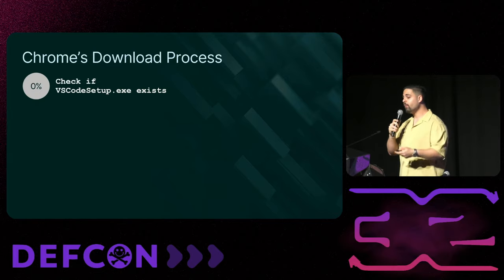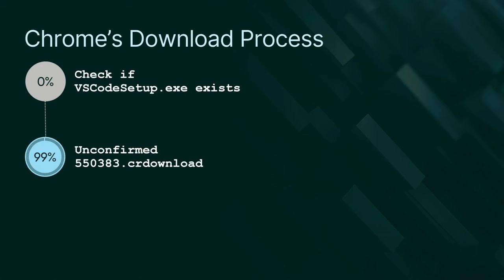Let's understand Chrome's basic download process. When Chrome downloads a file, it first checks if the file name already exists — if so, it adds a number in parentheses to the final name. Then it starts downloading the file into a temporary file with a .crdownload extension. Once the download is fully complete, Chrome renames the temporary file to the actual name. Since Chrome checks the name and decides the final name only when it starts the download, we thought there's potential to create confusion if we send a file with the same name in the middle of this process.